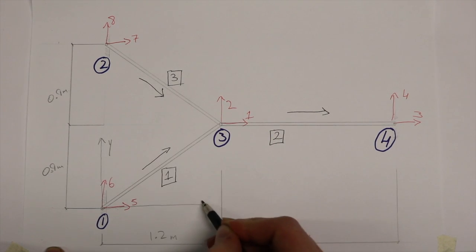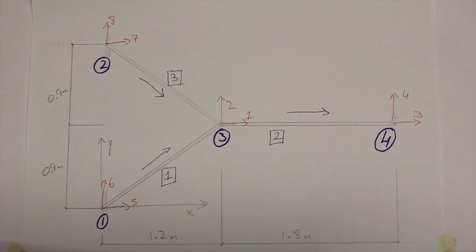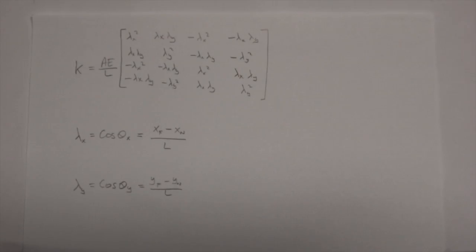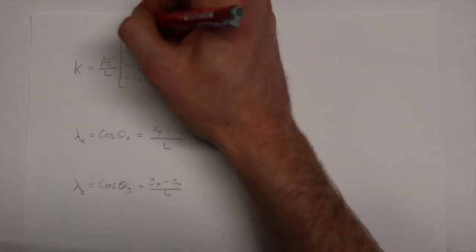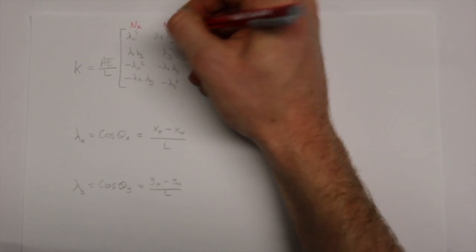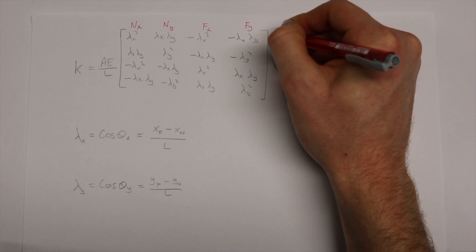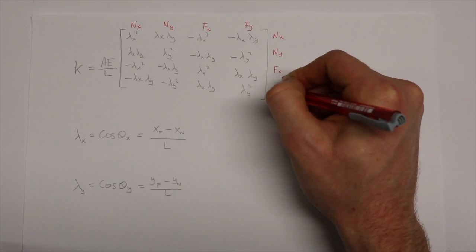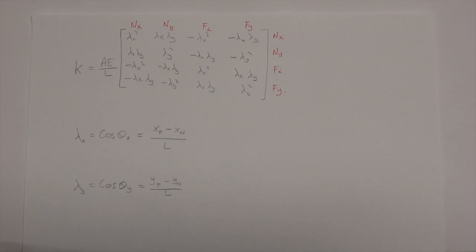The member global stiffness matrix is given by the equation as shown. A, E, and L are common to each of the 16 terms in the matrix. The columns and rows are organized by near node x and y degrees of freedom and far node x and y degrees of freedom.